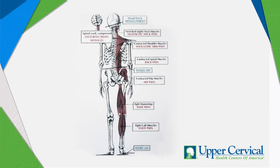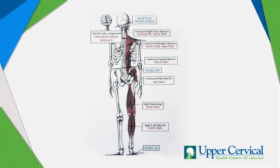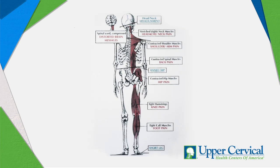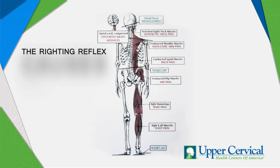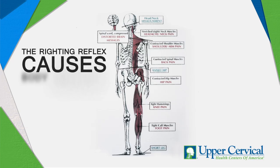Your eyes must remain balanced to the horizon in order for your brain to work properly. So your brain will send messages to your body to pull up one shoulder, raise a hip, and contract one leg.